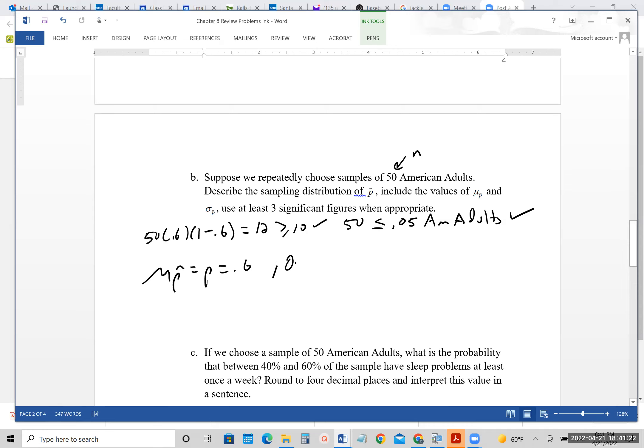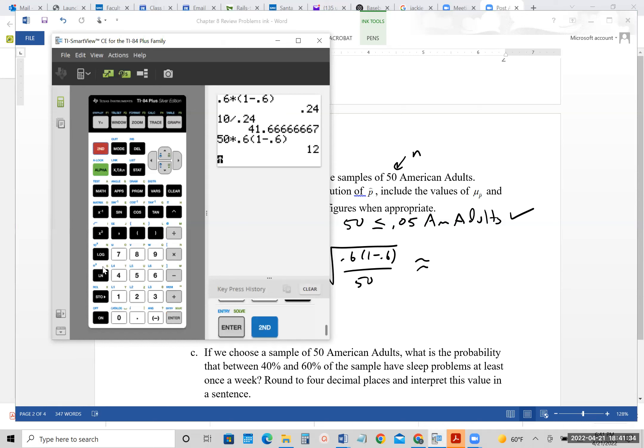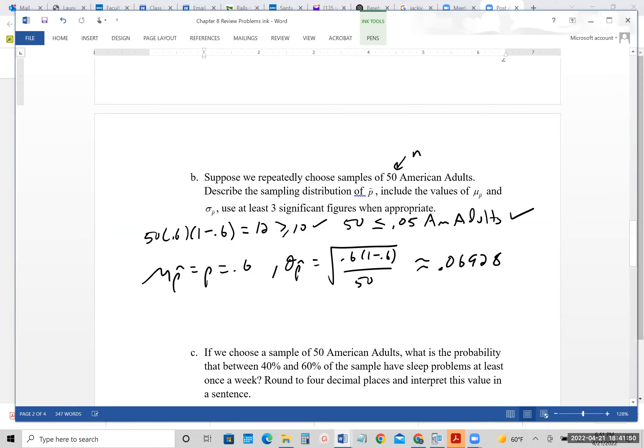And then we would just say 50 is less than or equal to 0.05 of all American adults. And we'll say that that is also true. So then we know our mu of P hat is equal to P, which is 0.6. And our sigma of P hat is the square root of 0.6, 1 minus 0.6 over 50, which is approximately, let's calculate it. Second square root, 0.6, parenthesis, 1 minus 0.6, parenthesis, divide that by 50. And we get 0.06928. So that's our mean and standard deviation, and it's approximately normal.